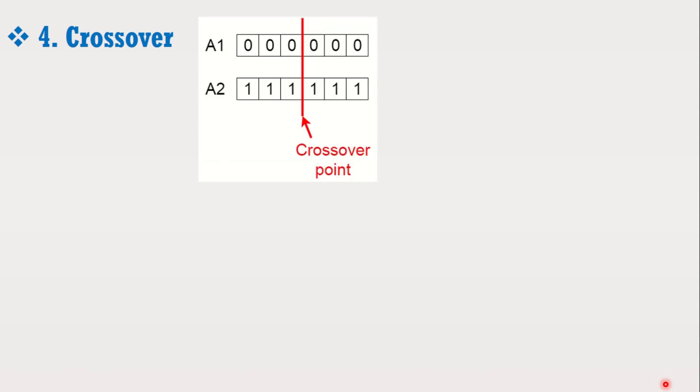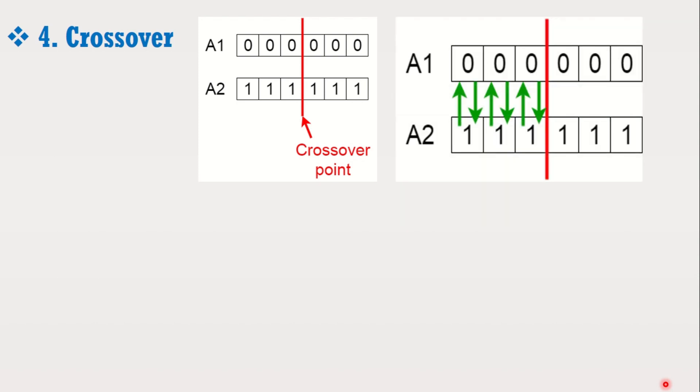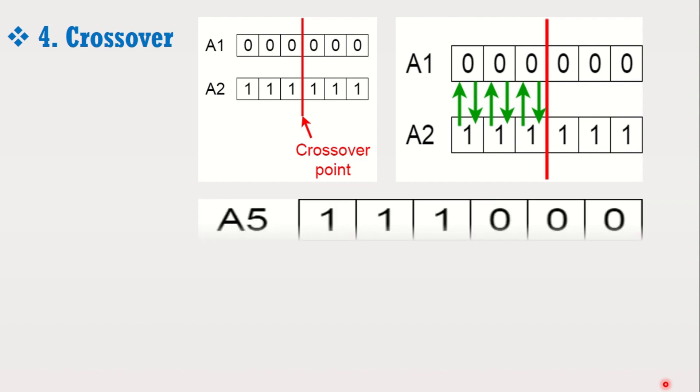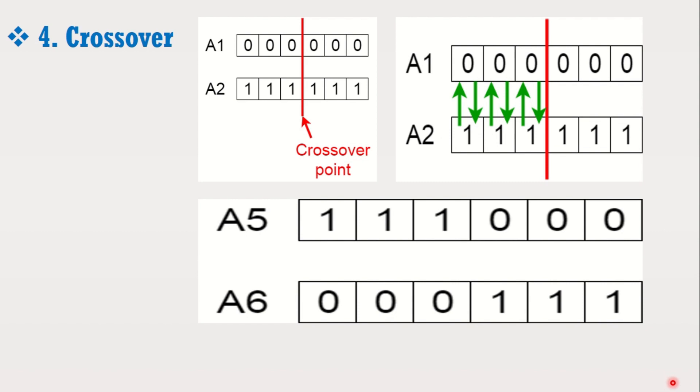Step four is crossover, which is the most significant phase in a genetic algorithm. For each pair of parents to be mated, a crossover point is chosen at random from within the genes. For example, consider the crossover point to be three. Offspring are created by exchanging the genes of parents among themselves until the crossover point is reached. By exchanging the genes among parents, the new offspring are added to the population.